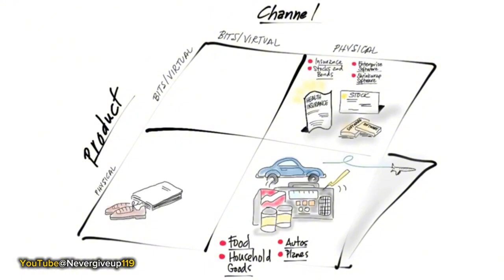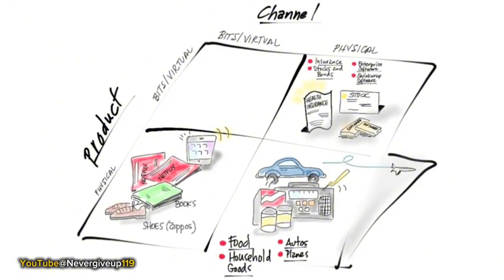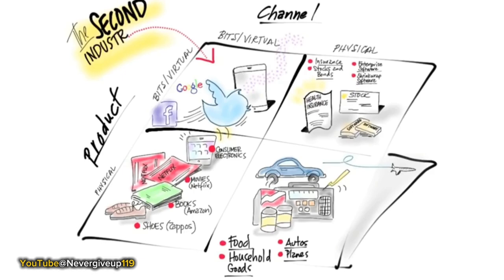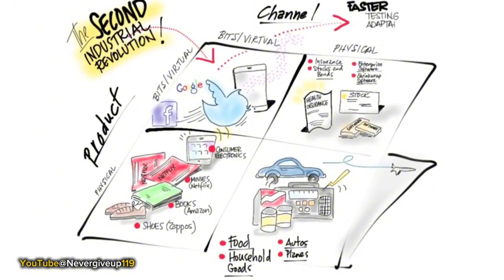It wasn't until the mid-1990s, with the emergence of the internet, that we were able to distribute physical products through a virtual channel — think of Amazon, Zappos, Netflix, even consumer electronics sold through the web. And in the beginning of the 21st century, we now have products that don't exist at all: Facebook, Twitter, Google — they're all bits, also distributed via the web. This virtual-to-virtual distribution channel allows for easier customization, optimization, and lets you change both product and channel almost on the fly.